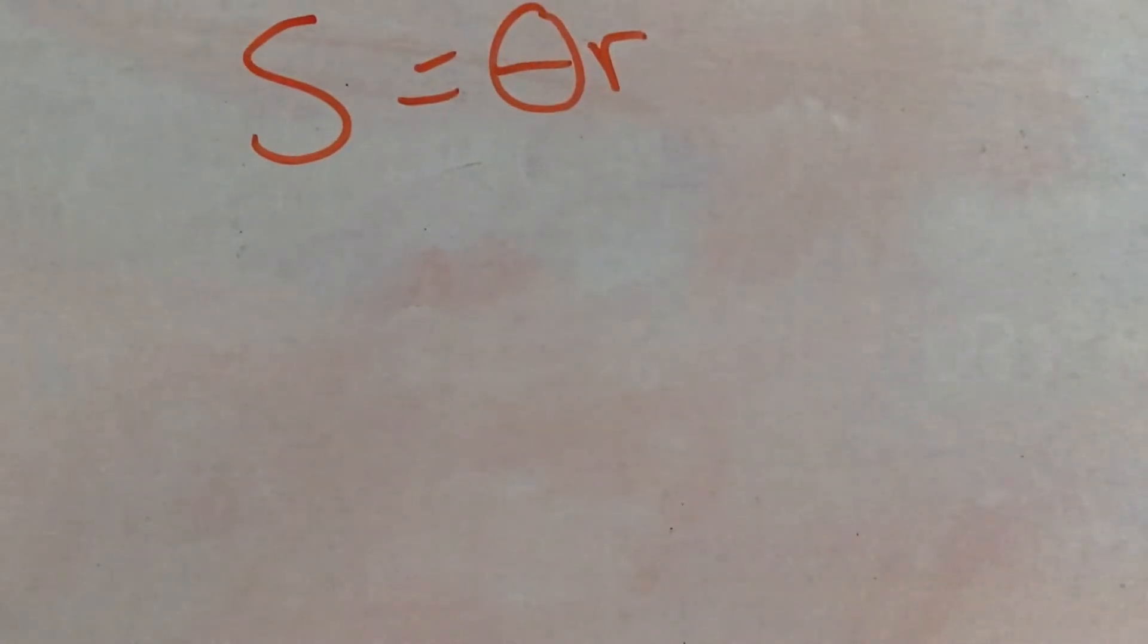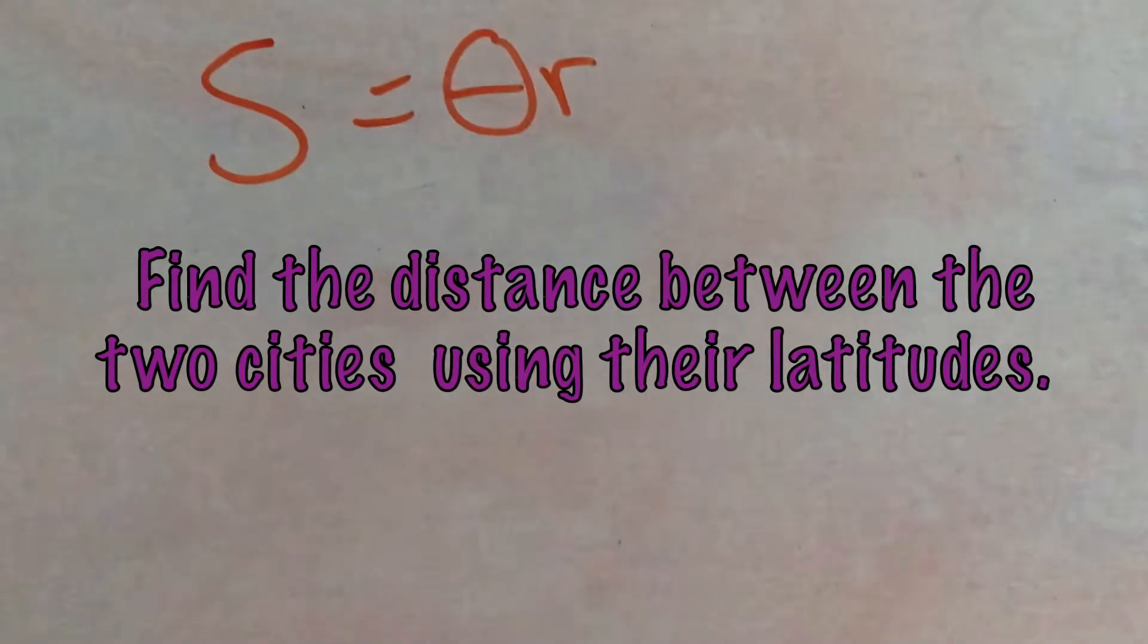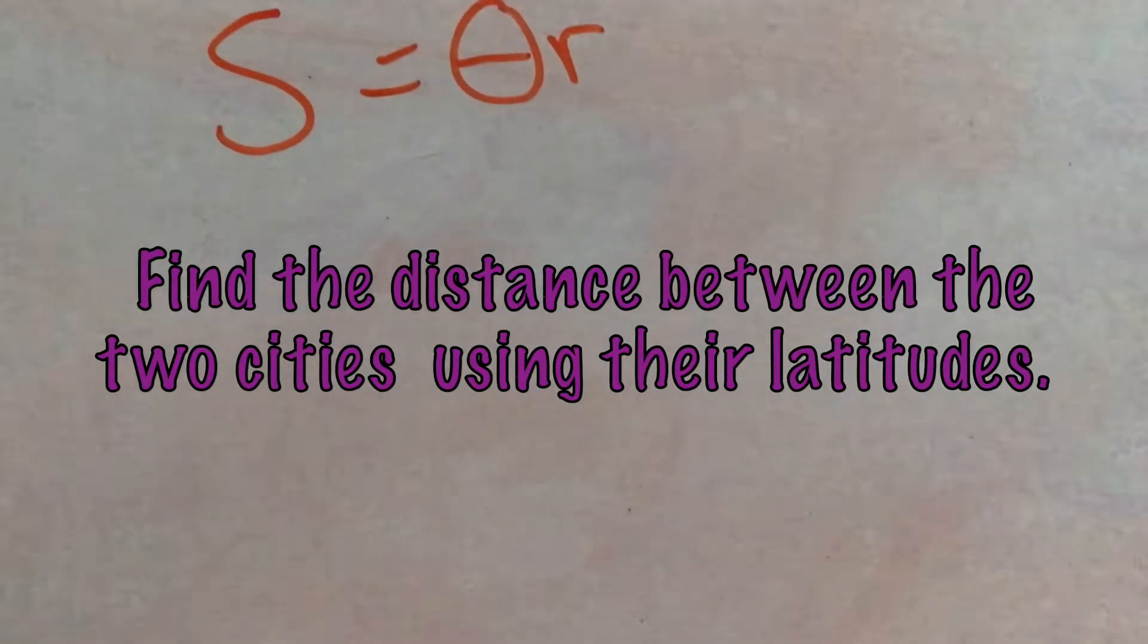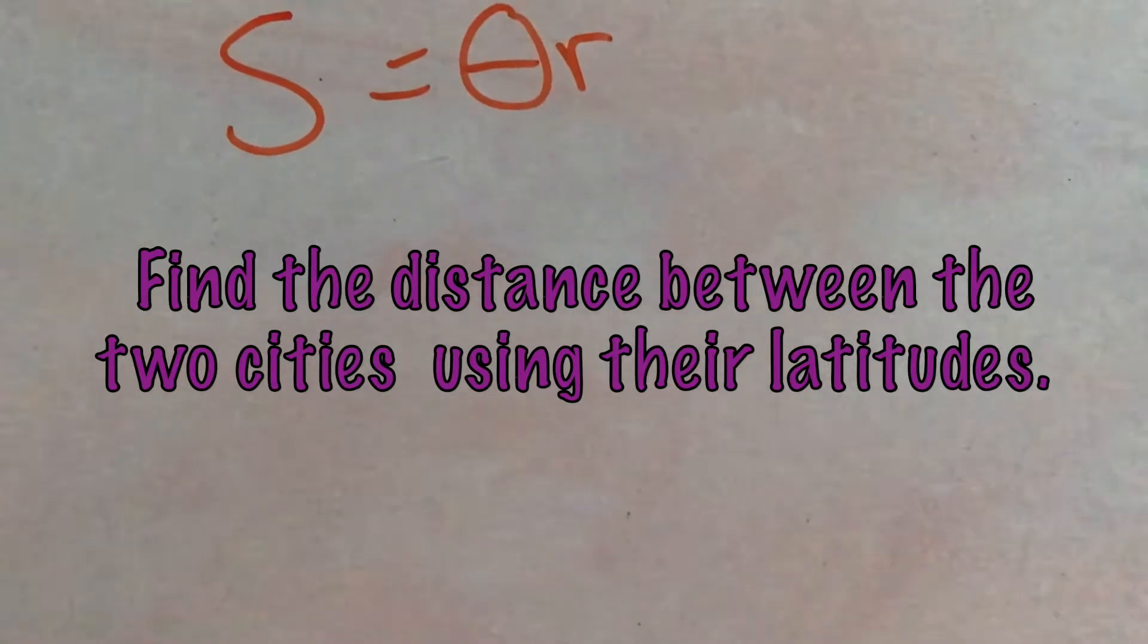So our problem is find the distance between the cities. Assume that the earth is a sphere of radius 4,000 miles and that the cities are on the same longitude, one city is due north of the other, and round the answer to the nearest mile.